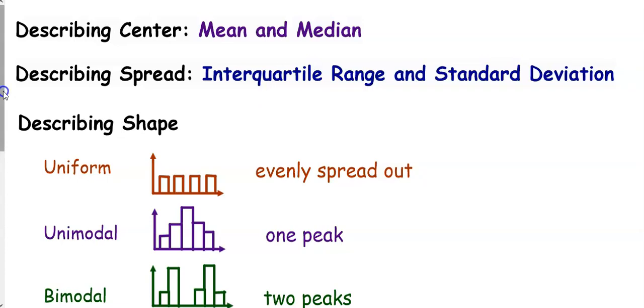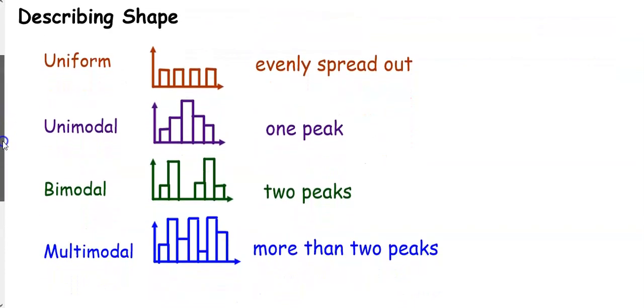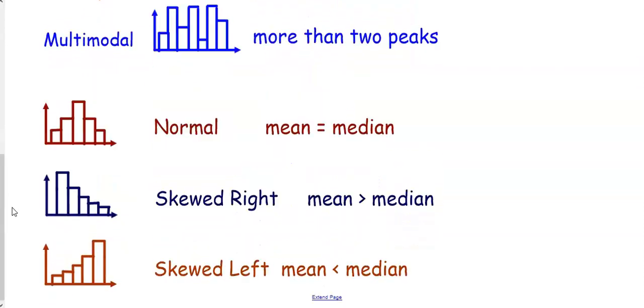When you're describing the shape, there are many different ways that you can do that. If your data is evenly spread out, then it's considered uniform. If it has one peak, then it is unimodal. Bimodal if it has two peaks, and multimodal if it has more than two peaks. So your data is normal if it has this symmetric shape, and if it has this perfectly symmetric shape, then the mean would be equal to the median.